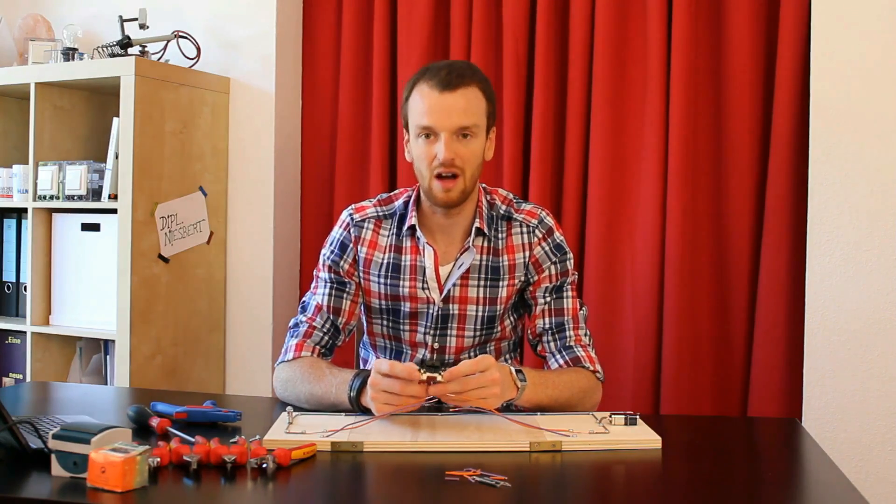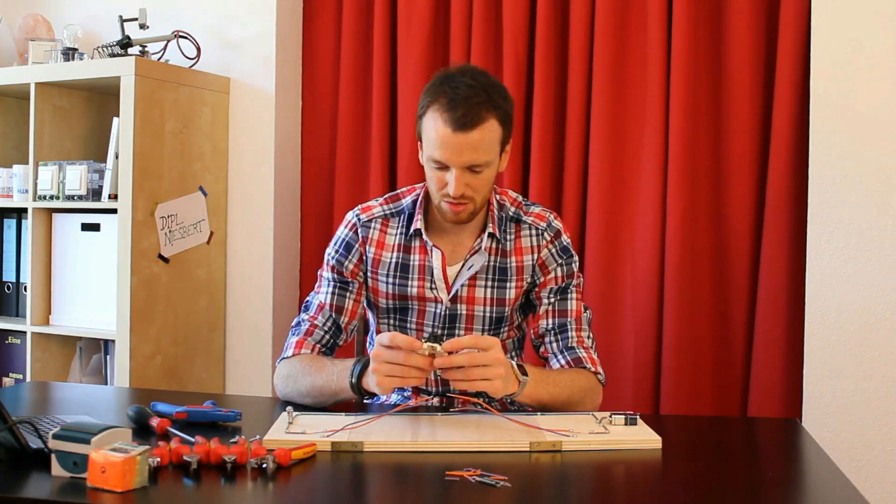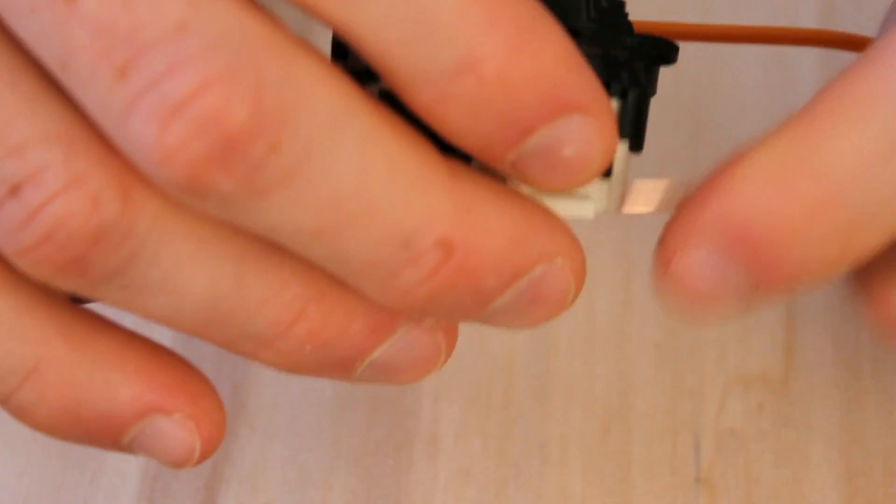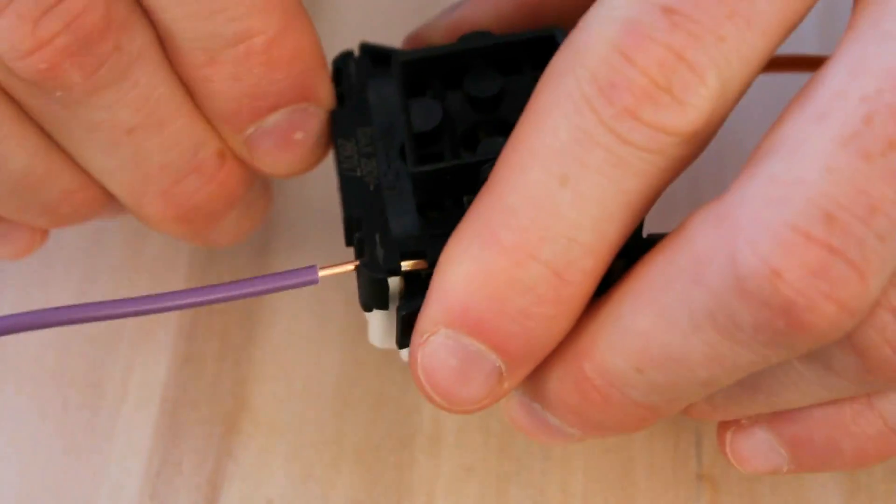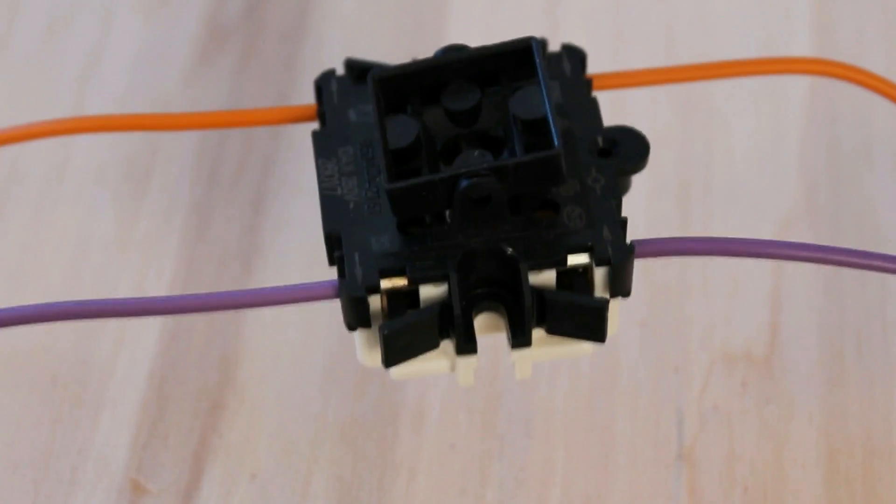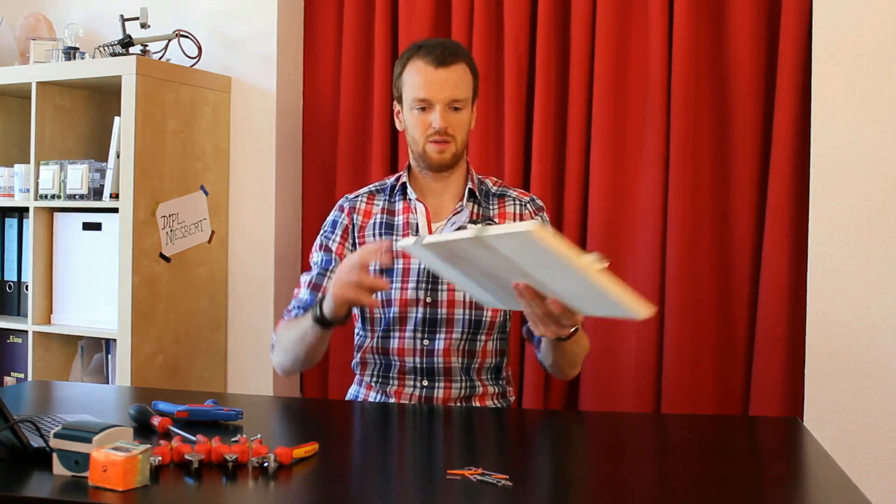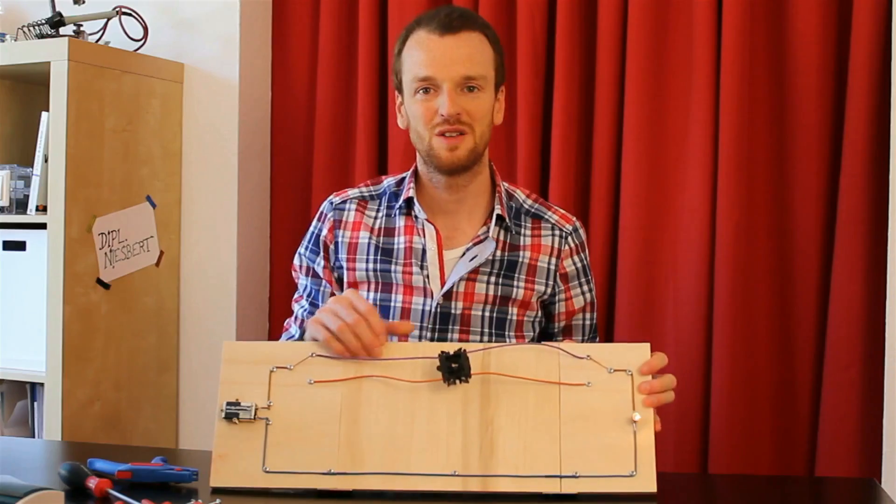Zwei mit einem Pfeil nach innen und zwei mit einem Pfeil nach außen. Jetzt baue ich den einfach mal hier dazwischen. Jetzt baue ich die zwei Pfeile nach innen auf die linke Seite und die zwei Pfeile nach außen auf die rechte Seite der Schaltung. Jetzt bin ich mal gespannt. Es funktioniert.